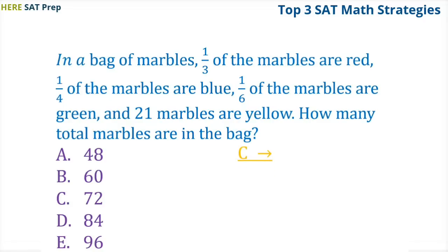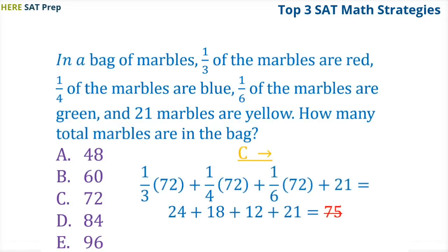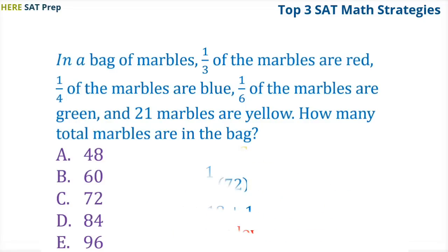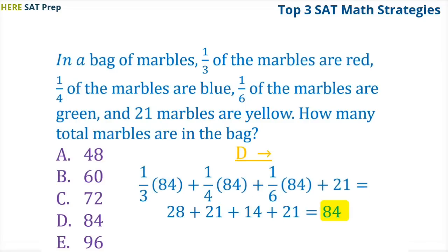Let's start with C, which is seventy-two. If there are seventy-two marbles in the bag, then one-third or twenty-four are red, one-fourth or eighteen are blue, one-sixth or twelve are green, and twenty-one are yellow. This adds up to seventy-five marbles, which is higher than seventy-two, so we know that seventy-two is too small, which means we should try D or E for our next answer choice to use. Let's try D, or eighty-four. If there are eighty-four total marbles in the bag, then one-third or twenty-eight are red, one-fourth or twenty-one are blue, one-sixth or fourteen are green, and twenty-one are yellow. This adds up to eighty-four, which is what we were aiming for, so our answer is D.